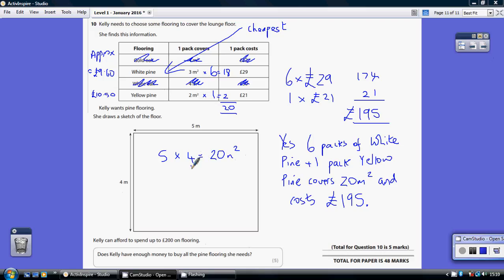So let's try and decide, we're trying to do it as cheap as possible. So which of these two is cheapest, white pine or yellow pine?